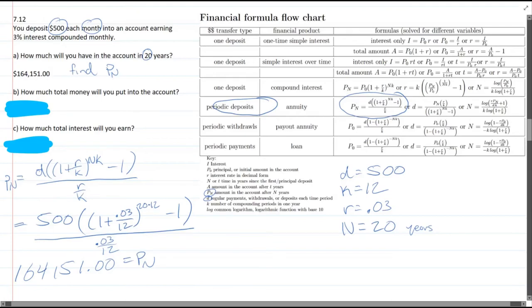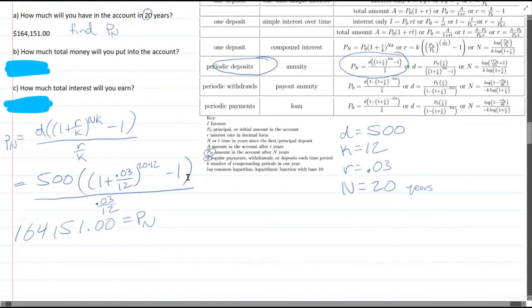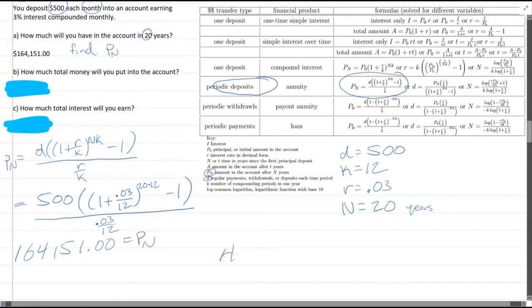Now, part B, how much total money did you put into the account? We don't need any of these fancy formulas for that at all. How much did we put in? Well, it's a good question. How much put in? We did 500 per month times 12 months per year times 20 years.